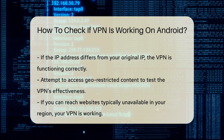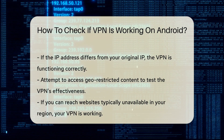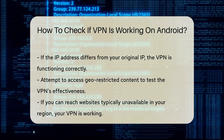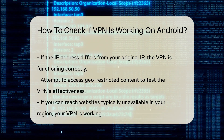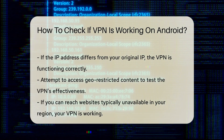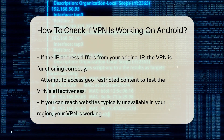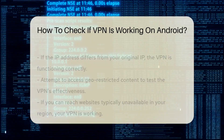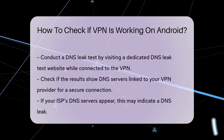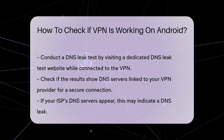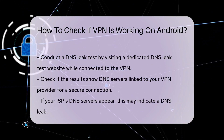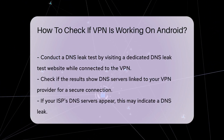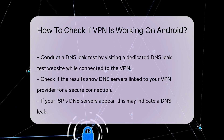Another method to verify your VPN connection is by accessing geo-restricted content. Try to visit a website or service that is typically unavailable in your region. If you can access this content, your VPN is functioning correctly.